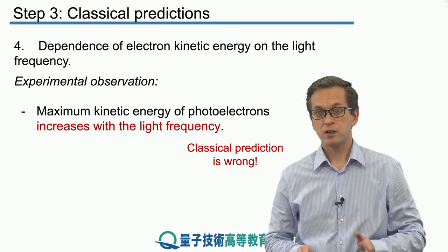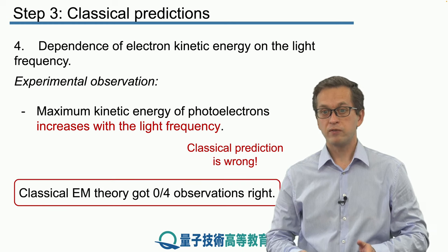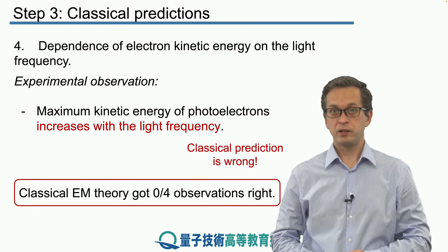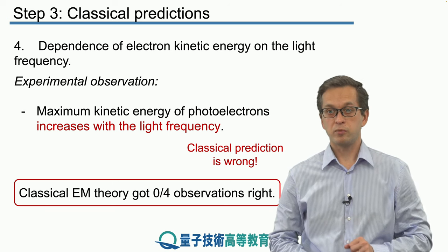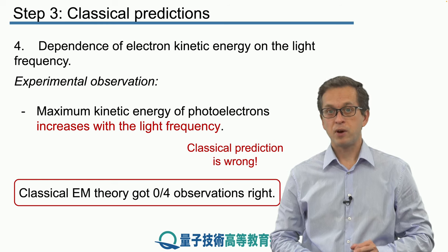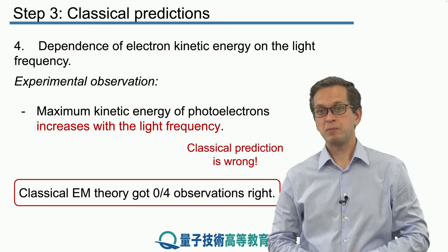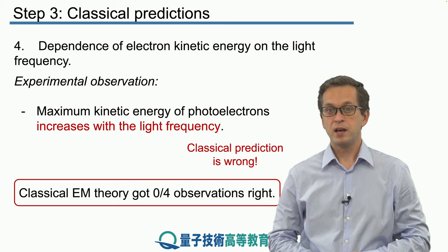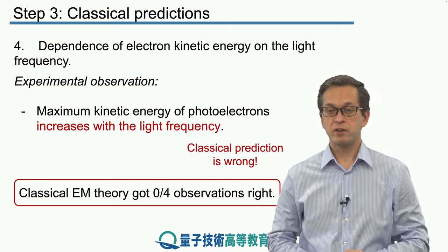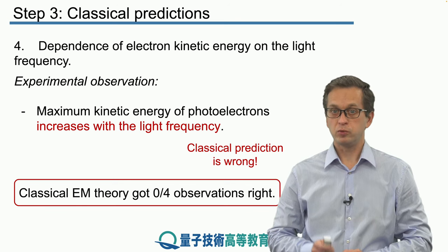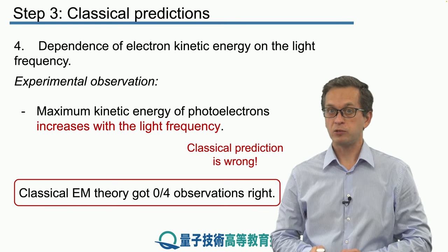So far we have considered four different observations, and in all four cases, classical electromagnetic theory gave us the wrong prediction — one not observed in the actual experiment. This is quite demoralizing. We have spent lessons developing this beautiful theory of electromagnetism, and yet we cannot describe a very simple phenomenon observable in a laboratory. But don't worry — in the next step we will tell you how to fix it.